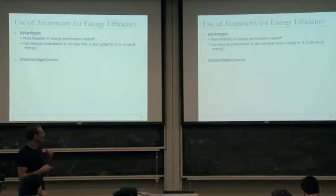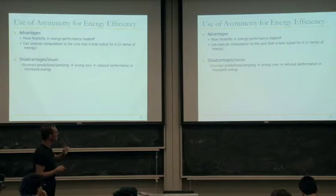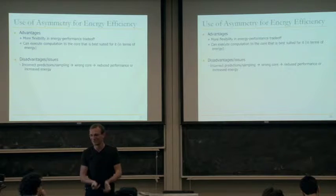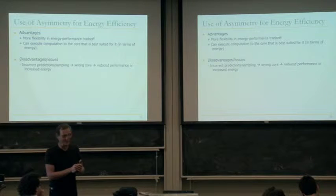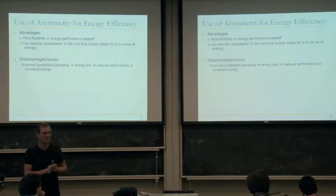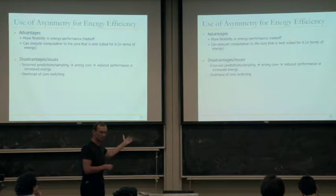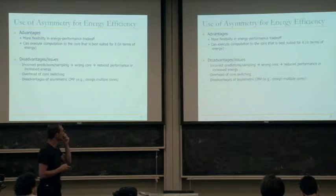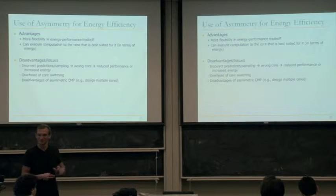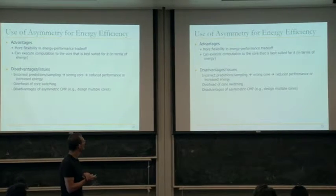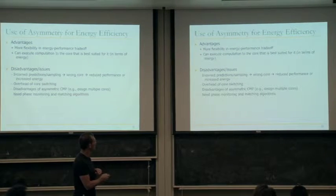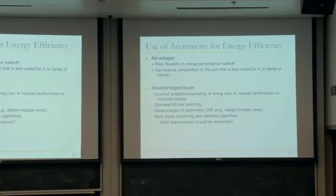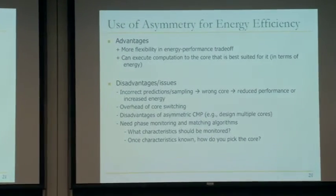Of course there are disadvantages. What if you choose the core incorrectly? You may lose efficiency by executing on a heavy core when you're not benefiting from it. There is always an overhead of switching between cores — migrating data and instructions. And you need algorithms to monitor phases and match them to the best core. There are lots of questions related to that.